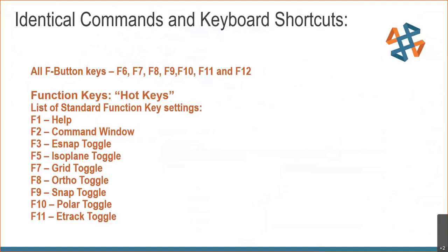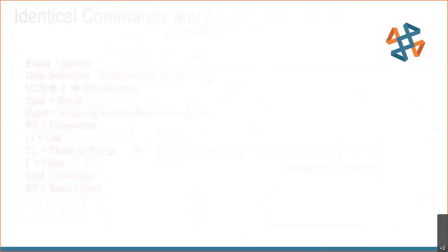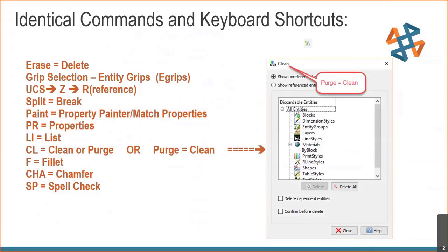Also on your F buttons and others: when you type in commands, there are what we call aliases inside DraftSite. This is where DraftSite speaks your language. There are aliases so that when you type in 'erase' inside AutoCAD — which equals 'delete' in DraftSite — you can type in either one and it knows to delete or erase. You can create your own aliases as well. Same thing with e-grips — you can double-click and get entity grips. You can type in UCSD and do a reference. Everything is very much the same.